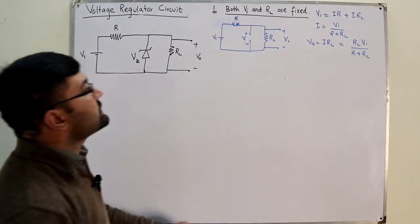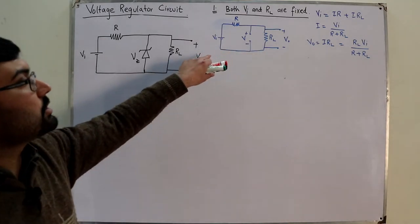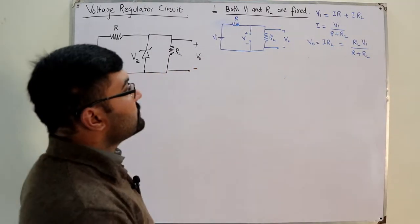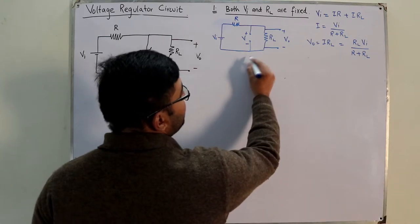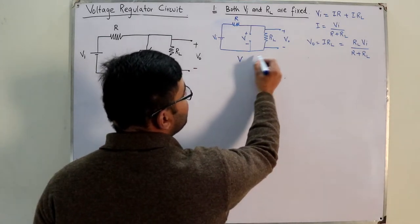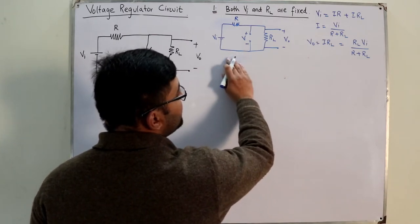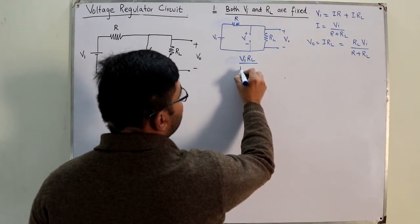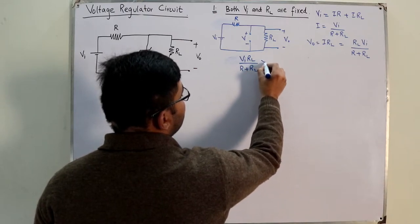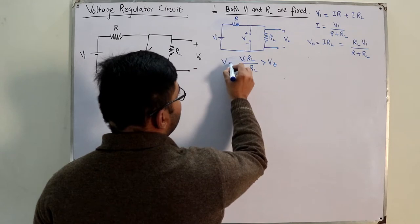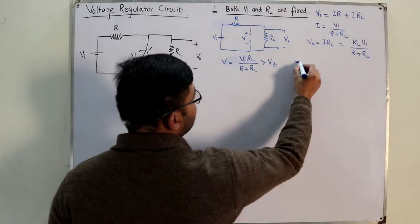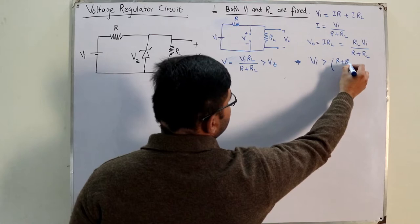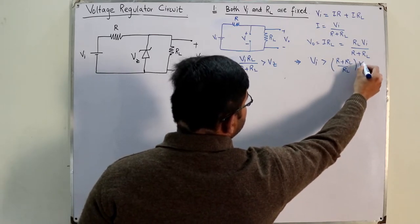This voltage V — which is RL times VI divided by R plus RL — should be greater than the Zener potential VZ. Or you could say the input voltage should be greater than (R plus RL) divided by RL, times VZ.